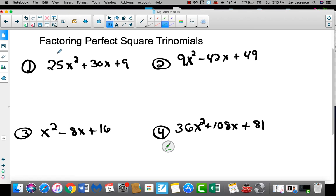I know number one is a perfect square trinomial because this is a perfect square and its square root is 5x. Square root of 9 is 3. If I multiply those two together, I get 15x doubled is 30x. So I'm going to get a 5x plus 3 and a 5x plus 3.